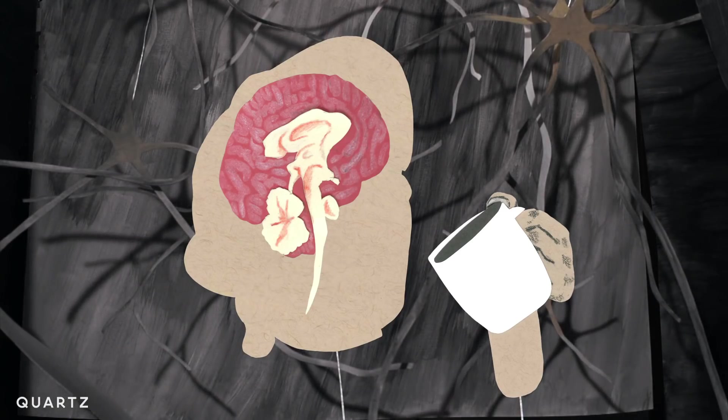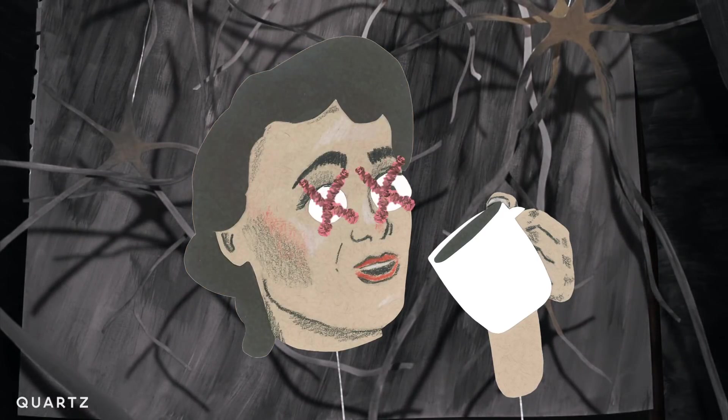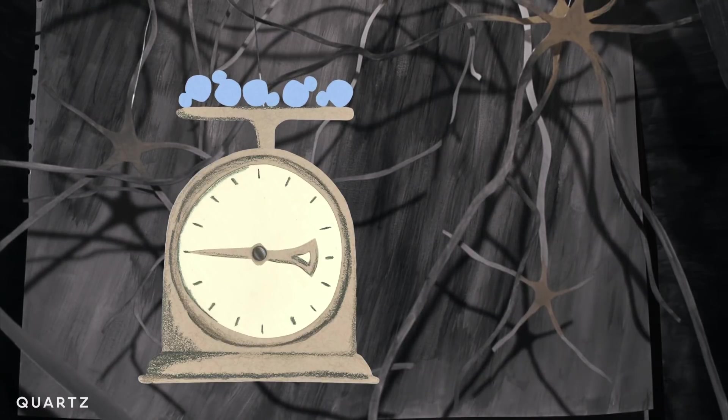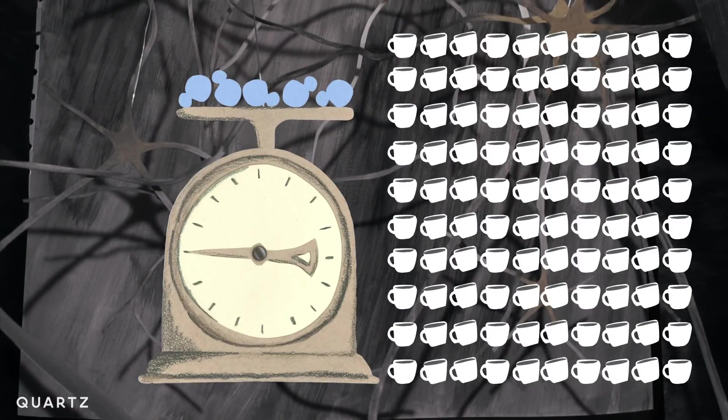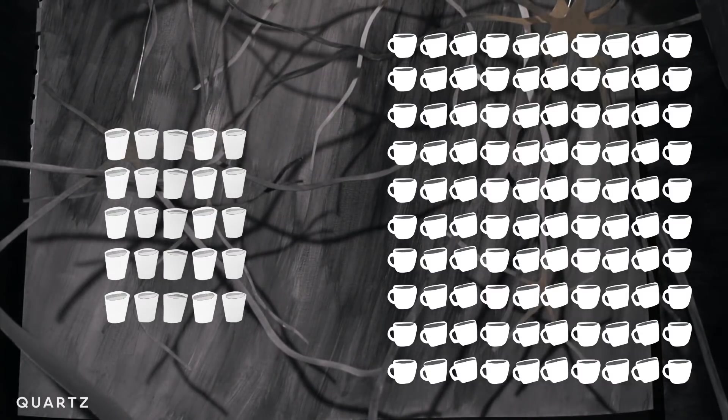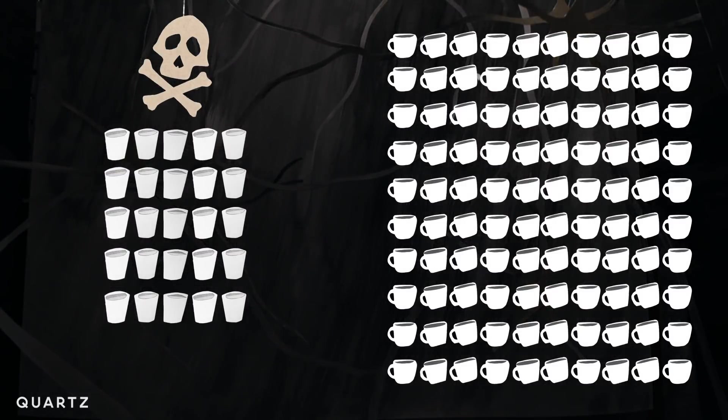But caffeine does stimulate the brain. So it is technically a drug. And it doesn't take that much to kill you. About 10 grams. That works out to about 100 cups of coffee, consumed within several hours. Since it only takes 25 cups of water to kill you, you'd die of water intoxication long before the caffeine could do anything.